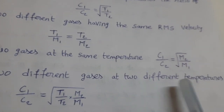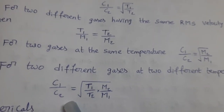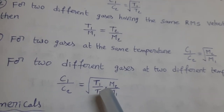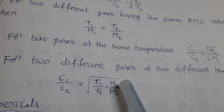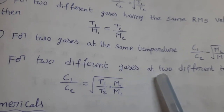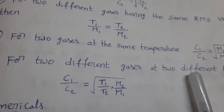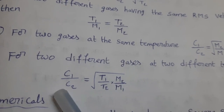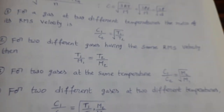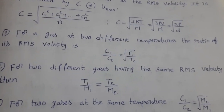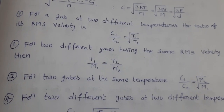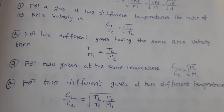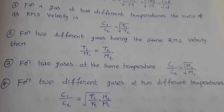For two different gases at two different temperatures: C₁/C₂ = √(T₁/T₂ × M₂/M₁). Here gases are different, temperatures are different, so molecular masses are also different. These are the four different formulae which we use in calculation of RMS velocity of the given gases. Remember them carefully.